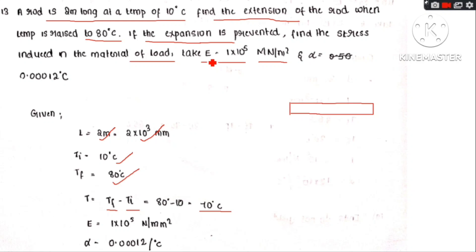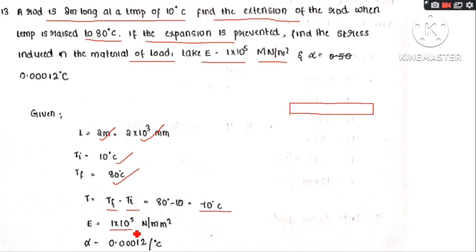The modulus of elasticity E is given as 1 into 10 raise to 5 mega newton per meter square, which is equivalent to 1 into 10 raise to 5 newton per mm square.